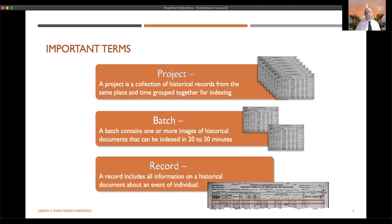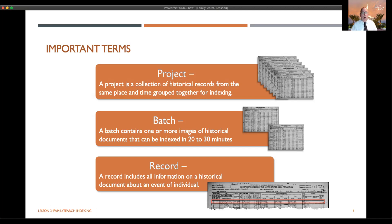Batches are made up of records. A record is the information specific to one person about a historical event. Julia Jennings was one entry out of 40 or 50 other records on that census image. An image can contain multiple records, or just one. I'll show you examples of birth record batches where every image is one child, and also christening ledgers where there are 10 or 12 records on one page.